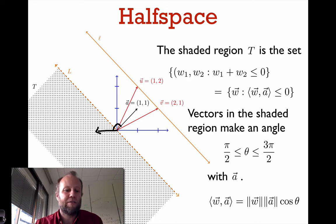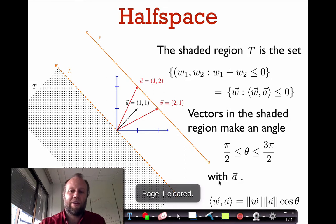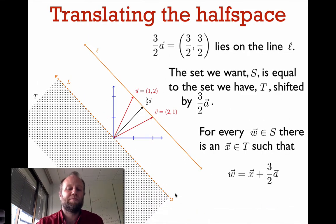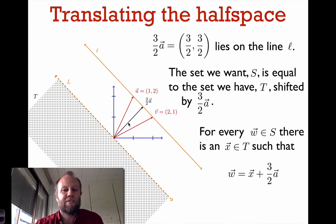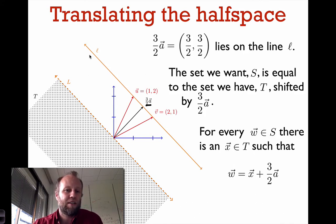This was the easier problem, so now let's translate it to our original problem. We can look for a scaling of the vector A that lies on the line little l. If we multiply A by three halves, we get a vector that lies on the line little l. So the set of all points to the southwest of little l is the set T shifted by the vector three halves times A.